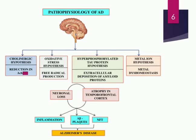The fourth is the metal ion hypothesis — if certain heavy metals act as toxins in the body, or if there is an imbalance in the homeostasis of some metals, that can predispose an individual to get Alzheimer's. All four of these factors can cause loss of neuron mass or atrophy in the temporal and frontal cortex and also in the parietal lobe. These events initiate inflammation and the deposition of amyloid beta plaques and neurofibrillary tangles (NFTs), leading to Alzheimer's disease.